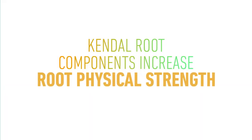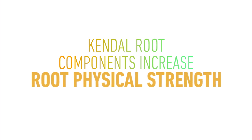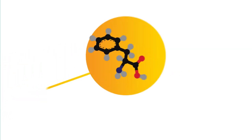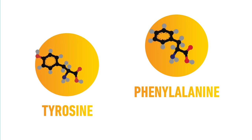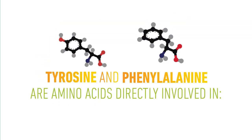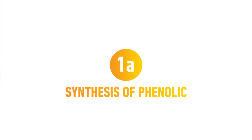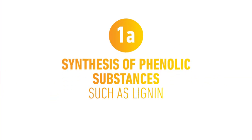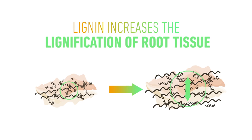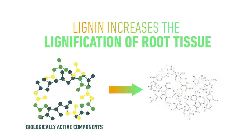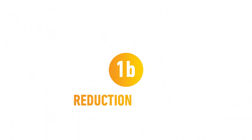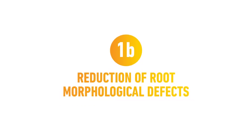Kendal Root components increase root physical strength. Tyrosine and phenylalanine amino acids are directly involved in the synthesis of phenolic substances such as lignin, responsible for the increased lignification of the root tissue and in the reduction of root morphological defects.